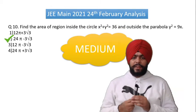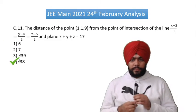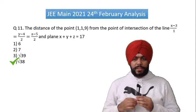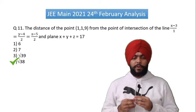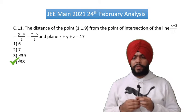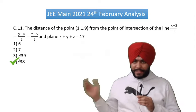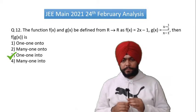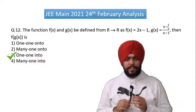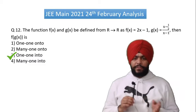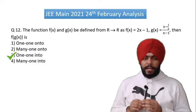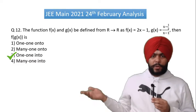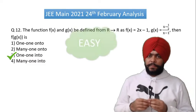Question number 11 is from 3D geometry — there is a question of a line, point, and plane. Definitely an NCRT level question; it is easy. Question number 12 has functions f(x) and g(x) given. You just need to know the NCRT level approach. Very easy.